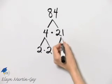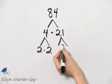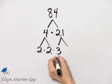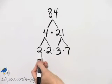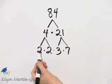21 is not prime, so we keep going. 21 is 3 times 7, and it just happens that we ended up at the same time with all primes.